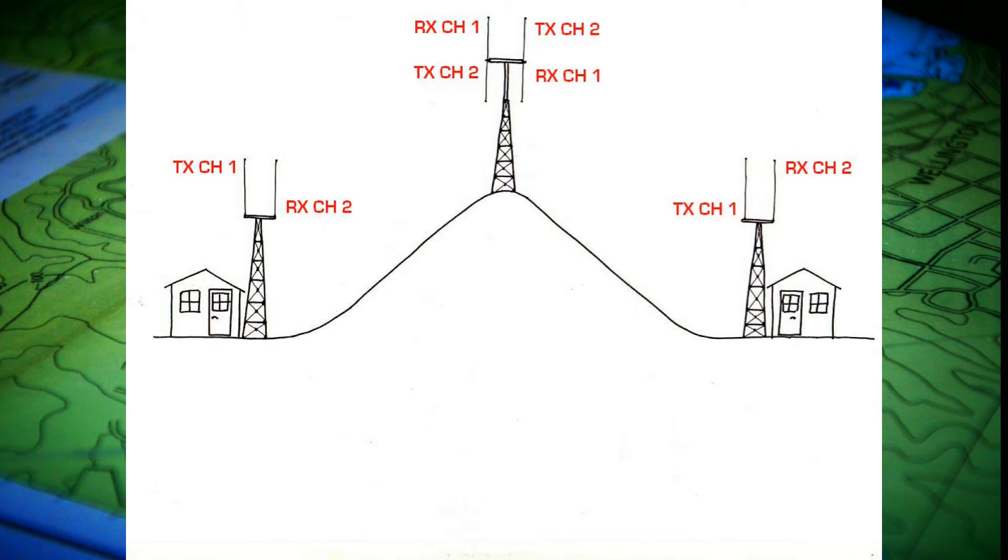So when you key the mic and transmit, you're transmitting on channel 1. The repeater is receiving that signal and rebroadcasting that signal on channel 2. This way the other station, which is set up just the same as yours on the same channel, is able to hear you.